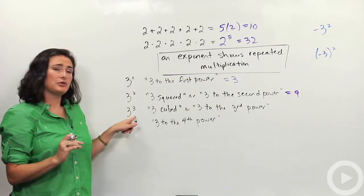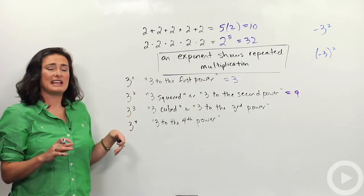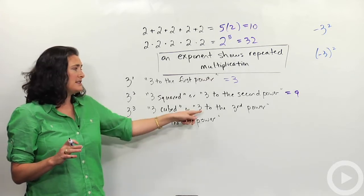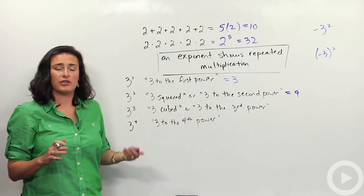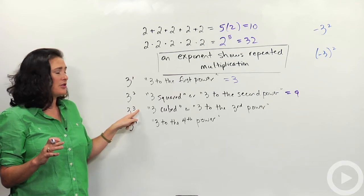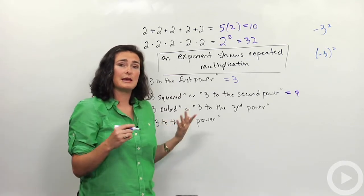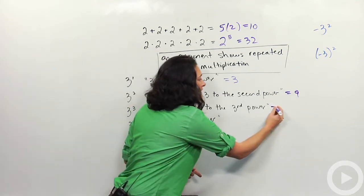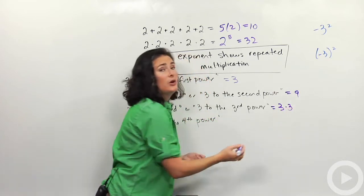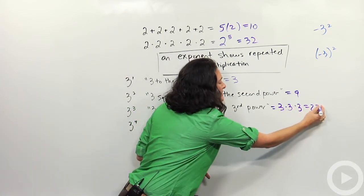The next one is 3 with that 3 exponent. You could say that either as 3 cubed or 3 to the third power — it's really just your preference. 3 to the third power means 3 times 3 and then times 3 again. 3 times 3 is 9, and then times 3 again is 27.